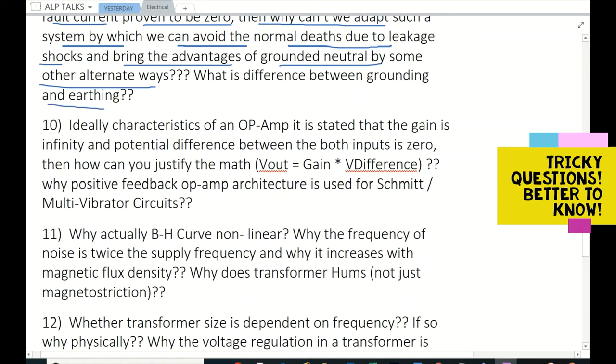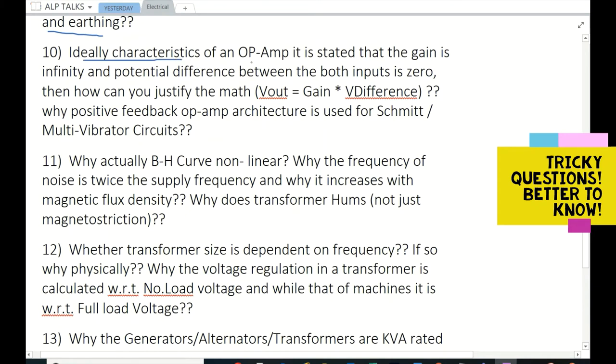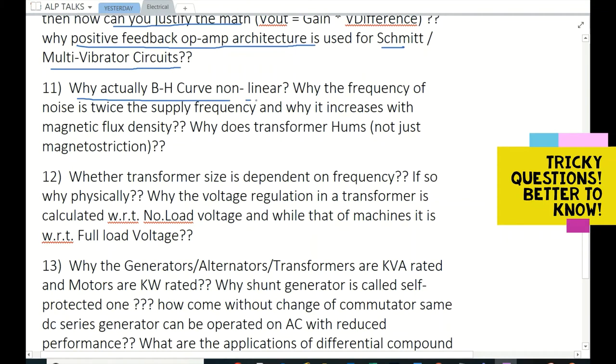Ideal characteristics of an op-amp: it is stated that the gain is infinity and potential difference between both inputs is zero. Then how can we justify the math Vout = Gain × V difference? Why is positive feedback op-amp architecture used for Schmitt trigger or multivibrator circuits? Why is actually BH curve non-linear? Why is the frequency of noise twice the supply frequency? Why does it increase with magnetic flux density? Why does transformer hum, not just magnetostriction? Whether transformer size is dependent on frequency? If so, why physically?